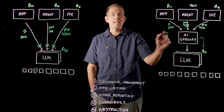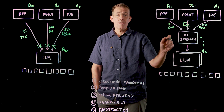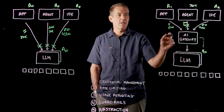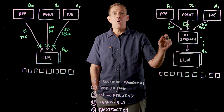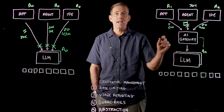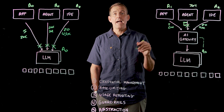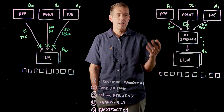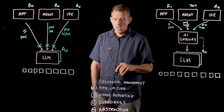The key thing — and why traditional API gateways are not sufficient to handle this requirement — is that you need both request rate limiting and token-weighted rate limiting. This allows you to compute the amount of tokens allowed given a certain time window in seconds, minutes, hours, or days.